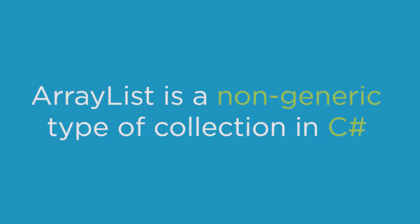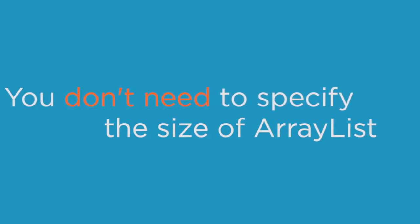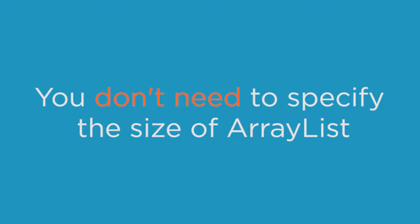ArrayList is a non-generic type of collection in C#. It can contain elements of any data type and it is similar to an array, except that it grows automatically as you add items to it. Unlike an array, you don't need to specify the size of an ArrayList.